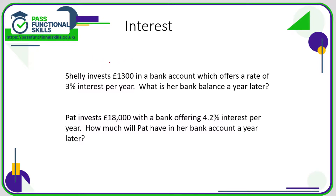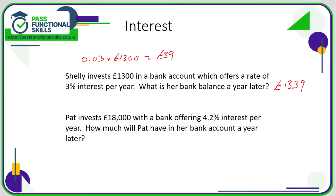So what is 3% of £1,300? The calculation is 0.03 multiplied by £1,300, and 0.03 times £1,300 is £39. So in that first year, Shelley receives £39 from the bank as interest. Therefore at the end of the year, she will have in her account the original £1,300 she invested plus the £39 interest, giving a total of £1,339.